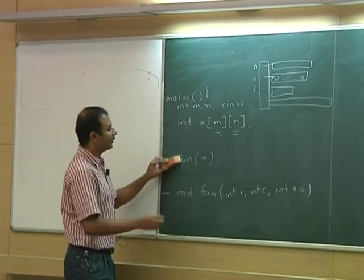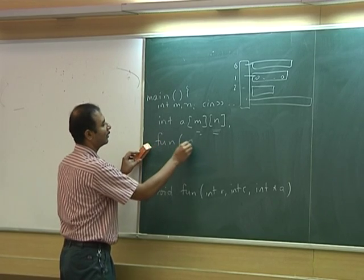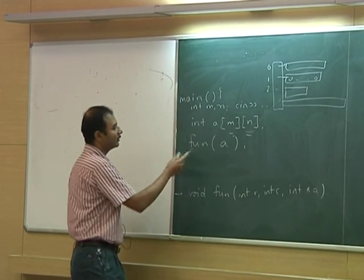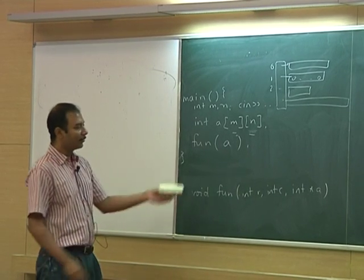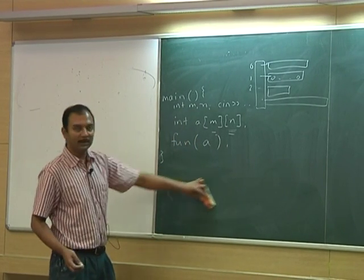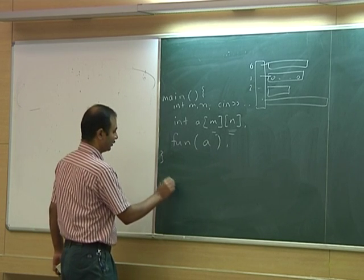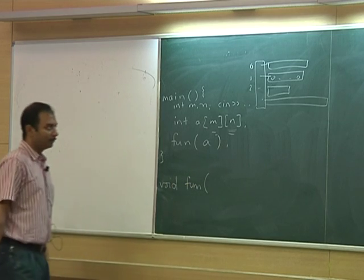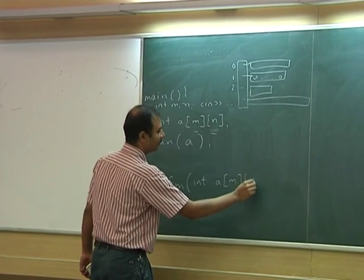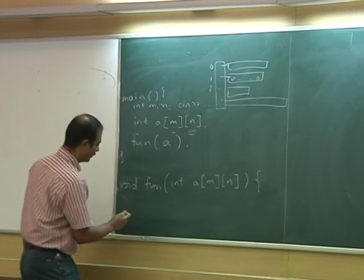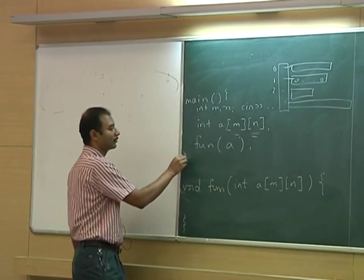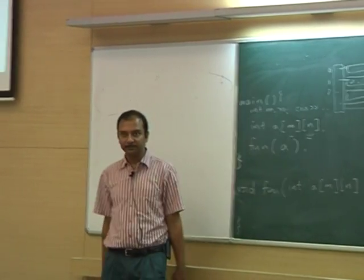Now suppose later on inside main you want to call a function on a — say you want to turn the function into upper triangular or whatever it is. So how should you define fun to properly accept a as input? Technically you cannot even do this in pure C or C++. If I write something like a[m][n], this is the most natural instinct of anyone learning C or C++ for the first time. The problem is m and n are not in scope — the scope has closed, so no one knows what m and n are.